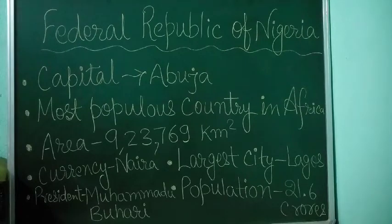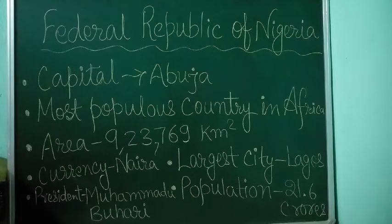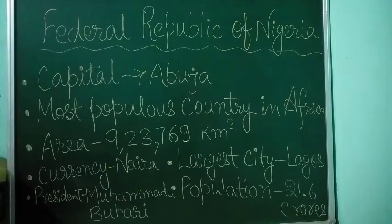Nigeria borders Niger in the north, Chad in the northeast, Cameroon in the east, and Benin in the west. Nigeria is a federal republic comprising 36 states and the Federal Capital Territory, where the capital Abuja is located.